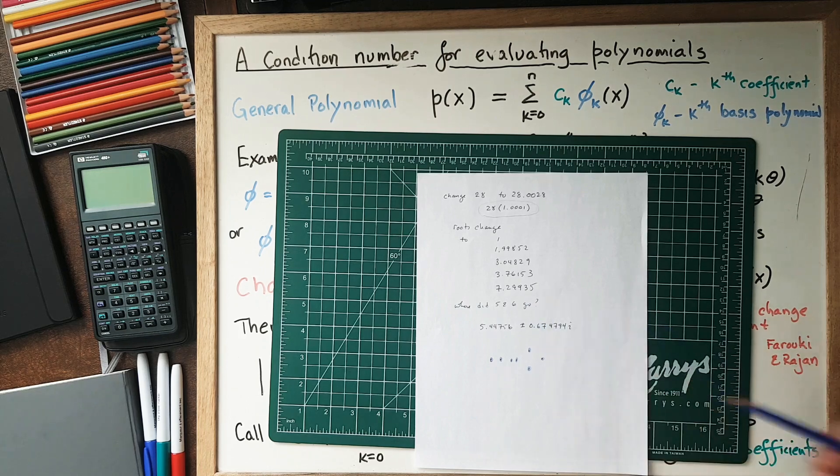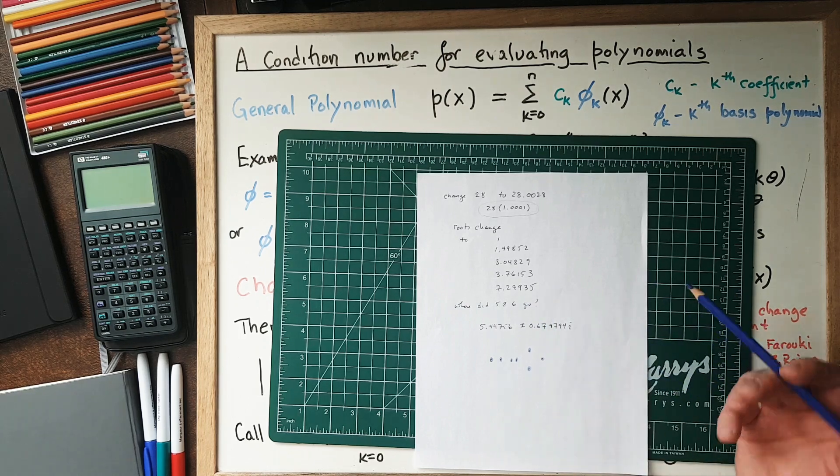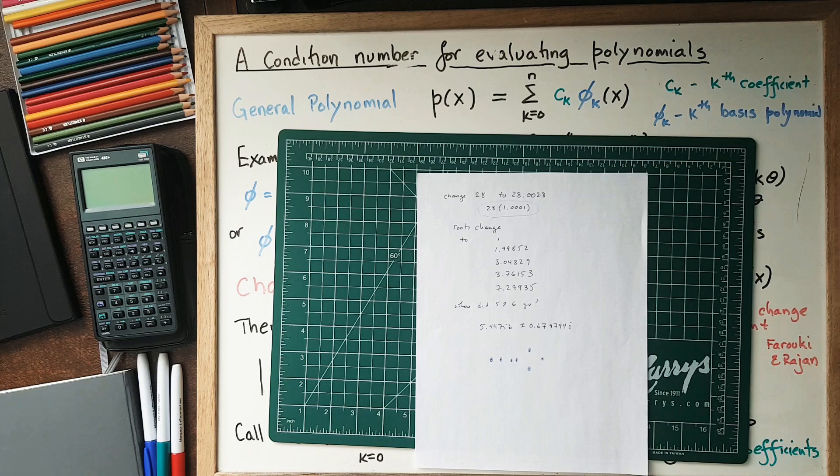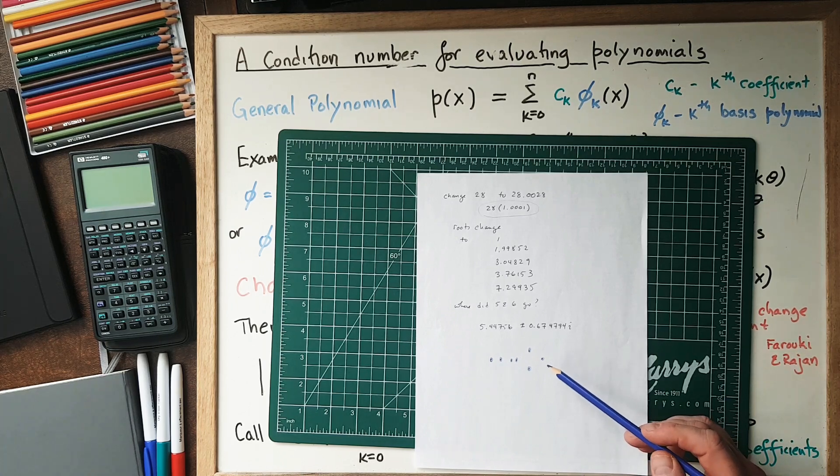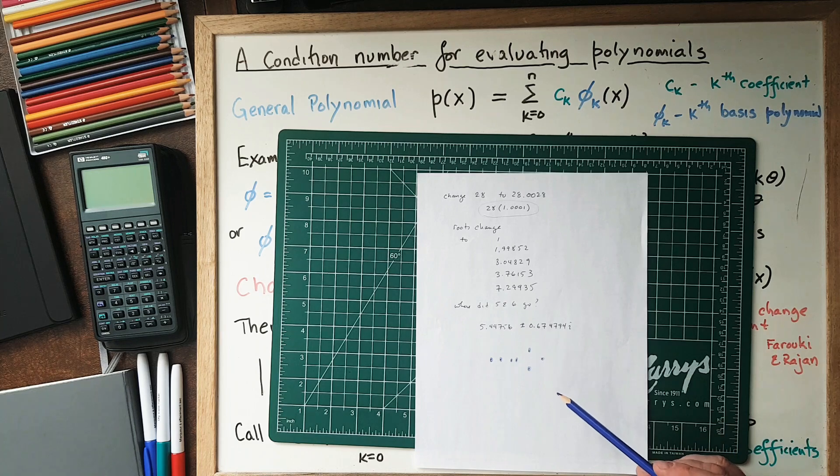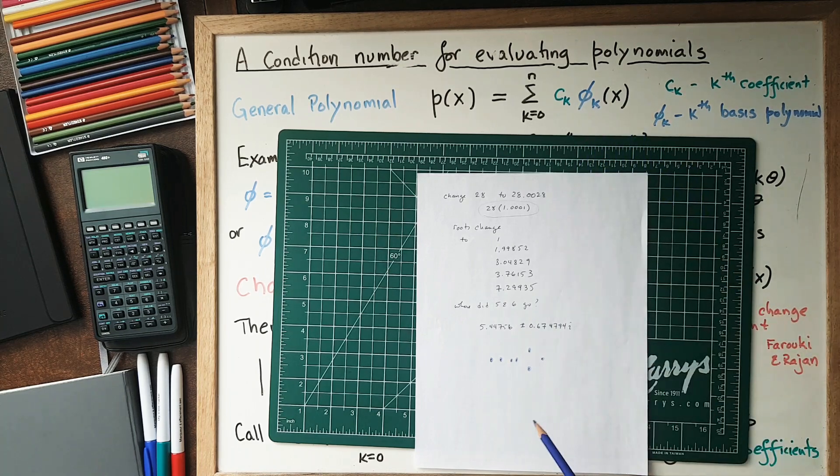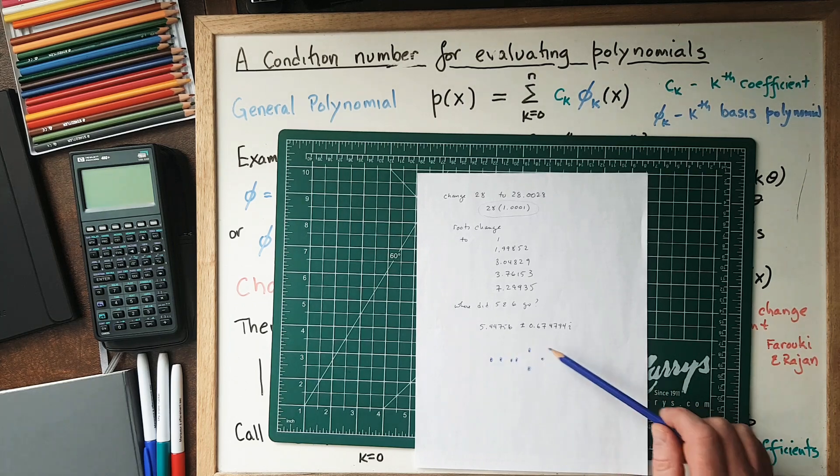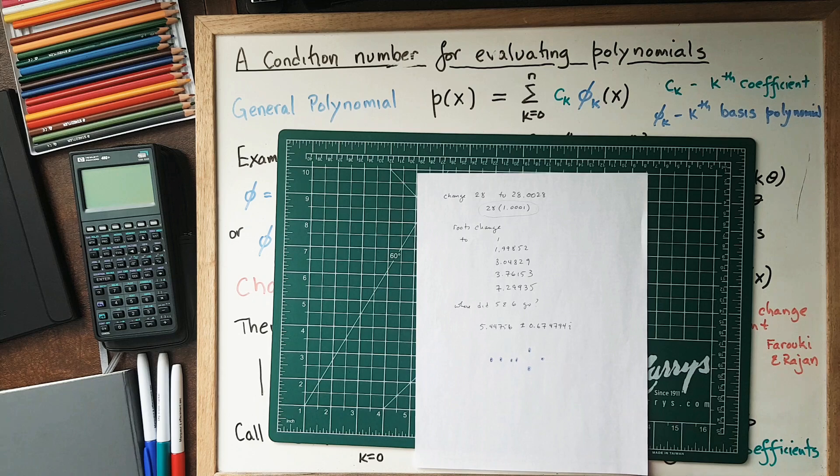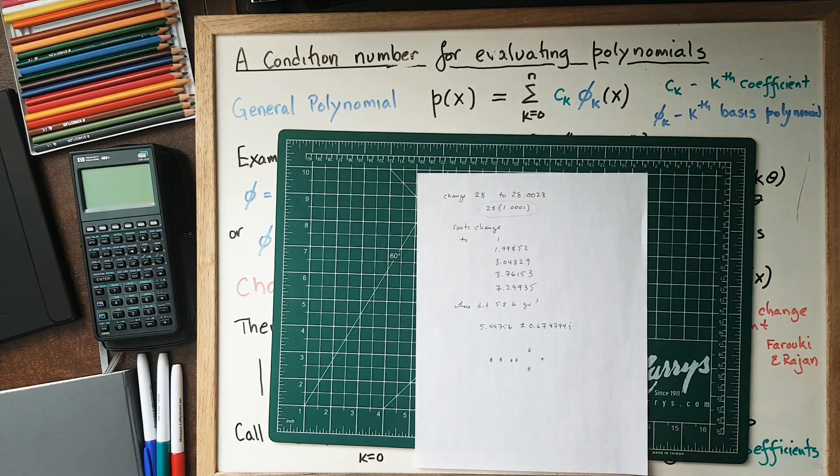That's less than the predicted condition number of 17 million, but it's still substantial. That condition number we had before is a bound, and it can be actually achieved, but often the changes are less than that. But if that condition number is large, then dramatic changes can happen. The role that the condition number B(x) plays in root finding is something I haven't talked about in this video, but it is directly relevant.